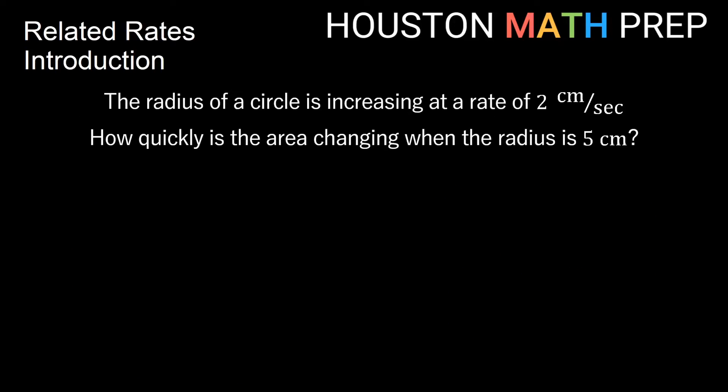If we look at an example of this, let's say the radius of a circle is increasing at a rate of 2 centimeters per second, and we want to know how quickly the area is changing at a particular point in time, let's say when the radius is 5 centimeters.